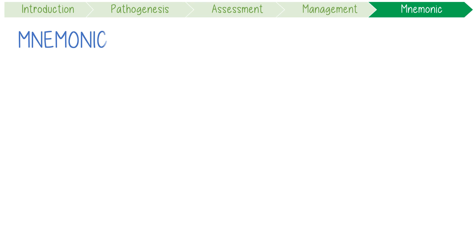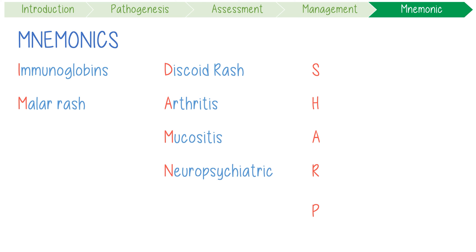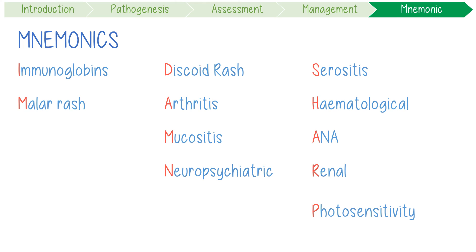Here's a great mnemonic to remember all 11 diagnostic criteria: 'I'm DAMN SHARP' — Immunoglobulins, Malar rash, Discoid rash, Arthritis, Mucositis, Neurological issues, Serositis, Hematological dyscrasias, ANA, Renal disease, and Photosensitivity.